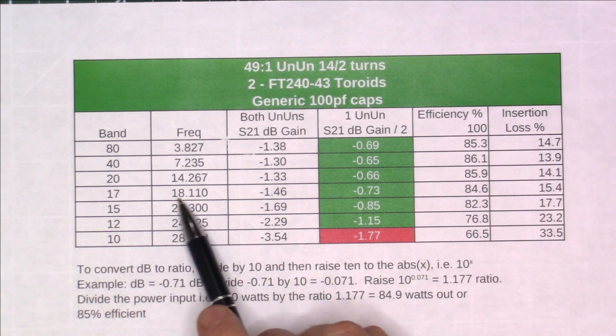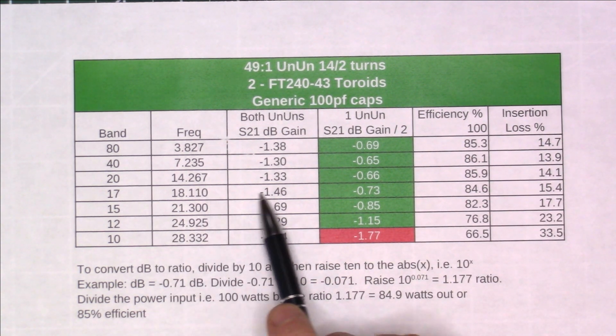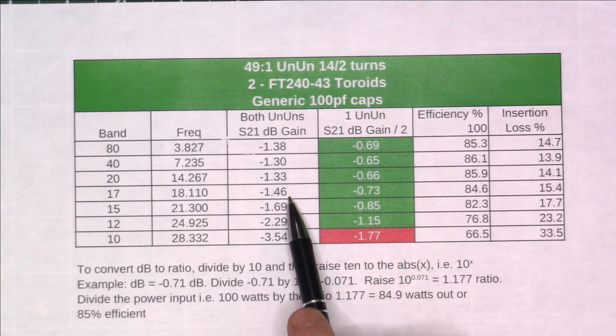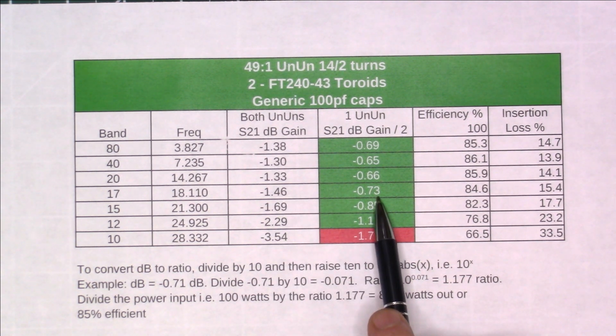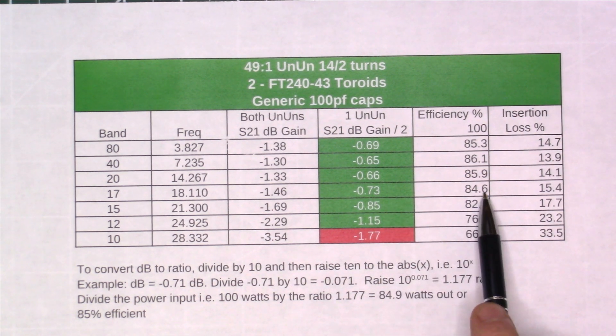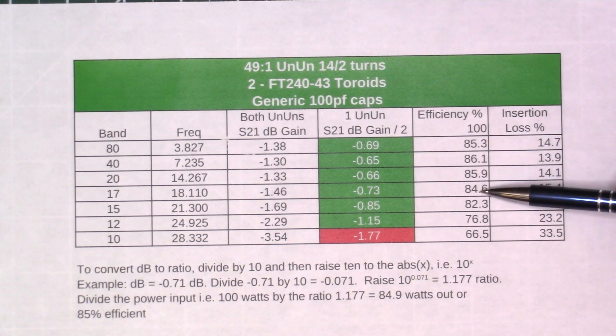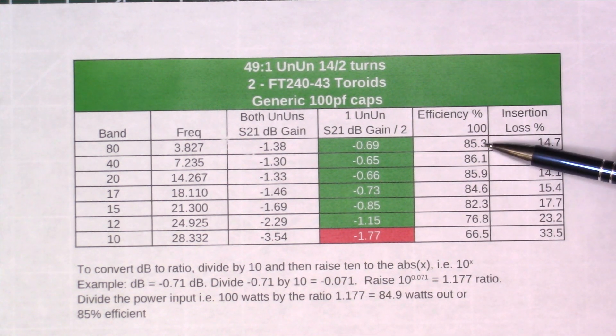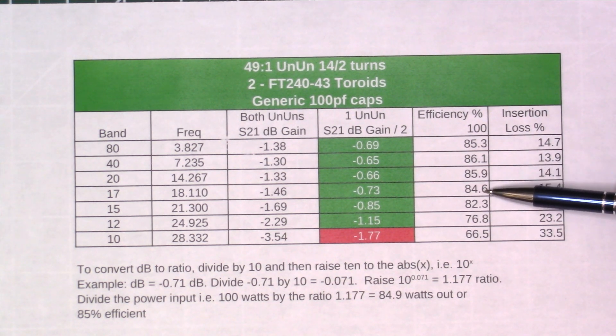At the 17 meter band at 18.110, we had a loss of 1.46 dB, which equates to 0.73 dB through each one, so approximately 85% efficiency again. These are all pretty close right here. They're within 1 dB all the way across there. Really there's 1.5 dB across all the bands, 80 through 17.